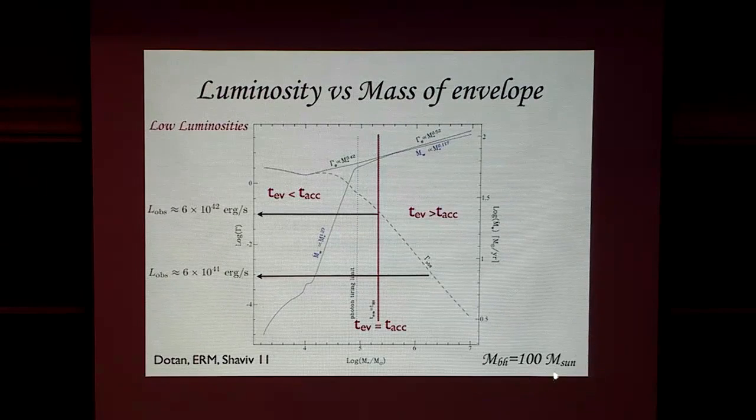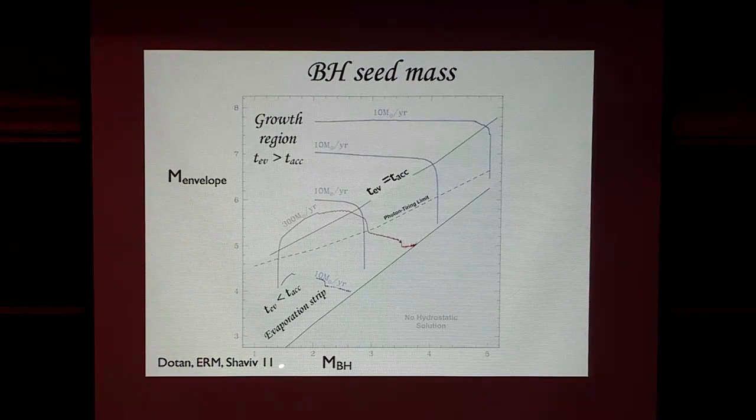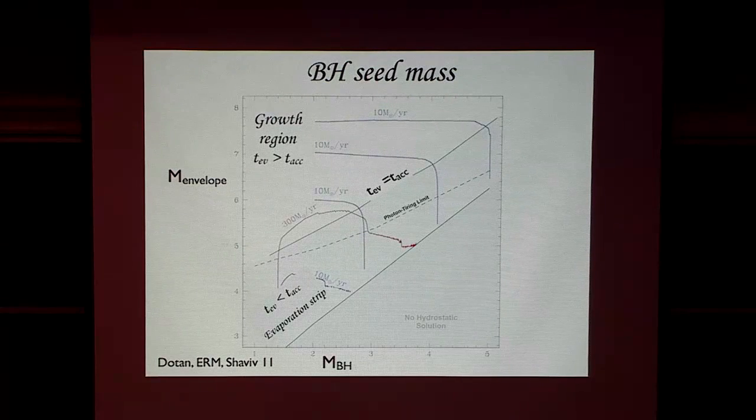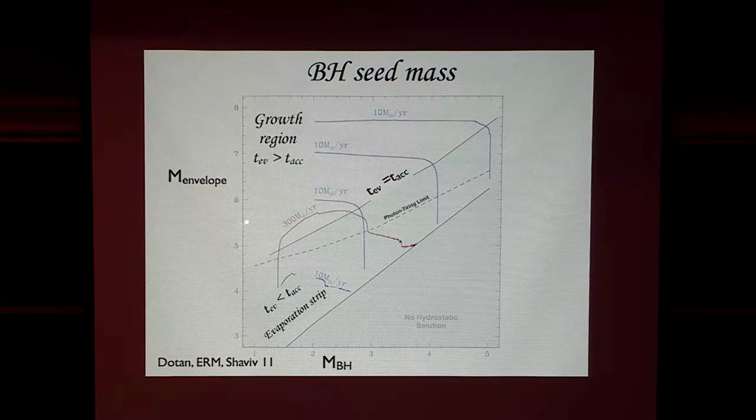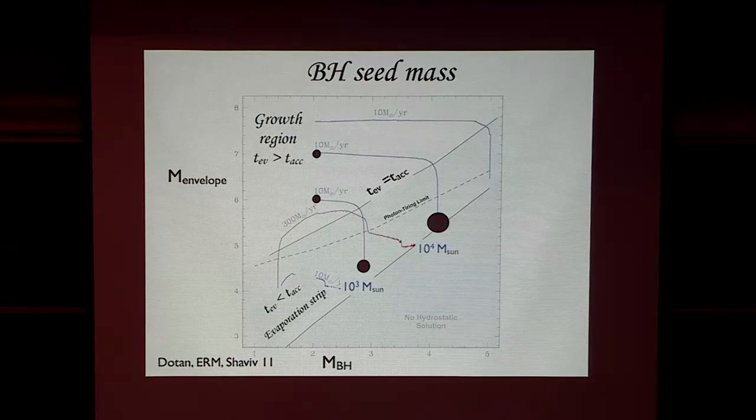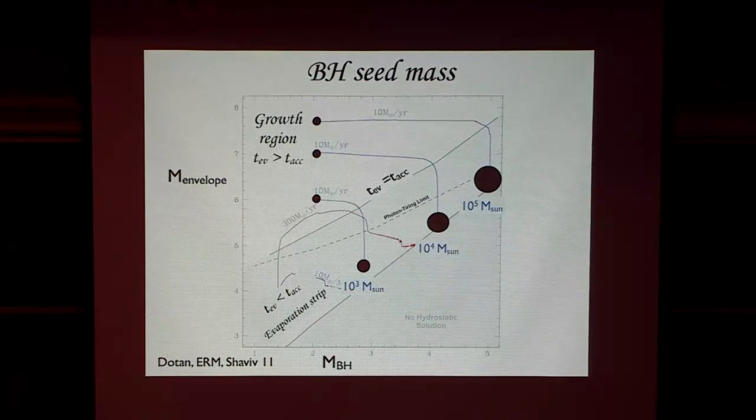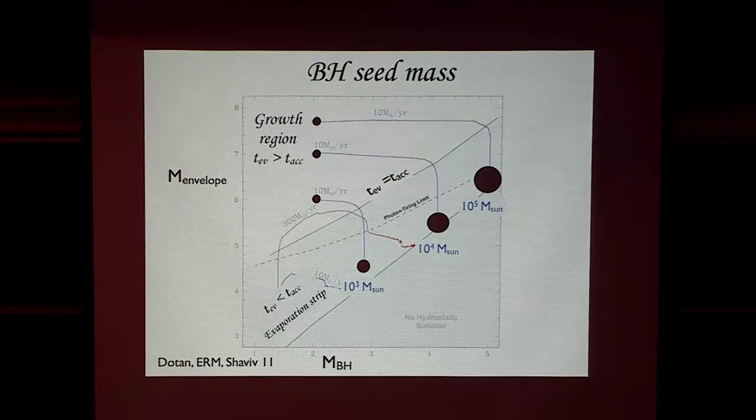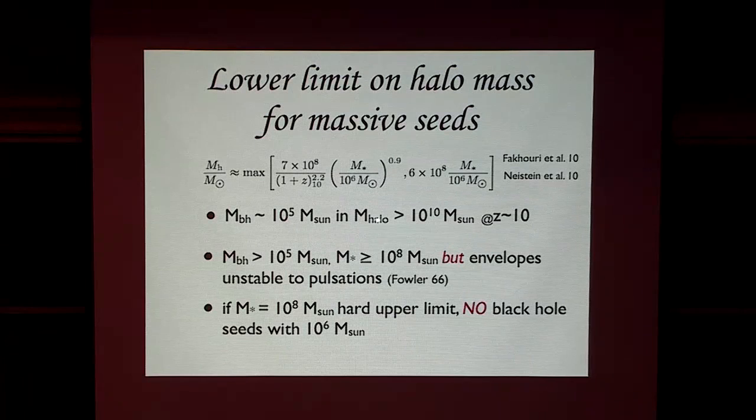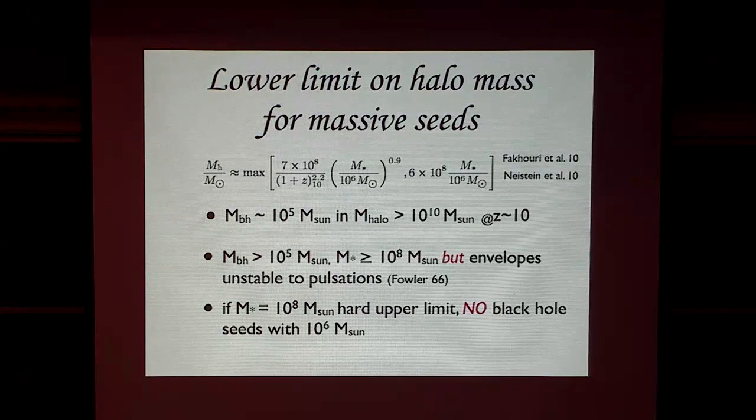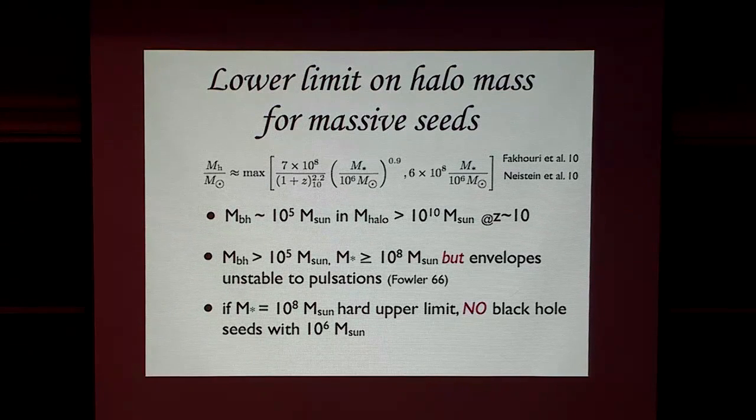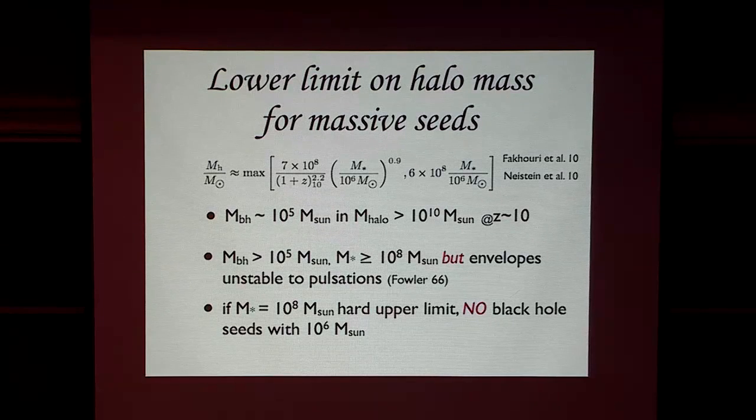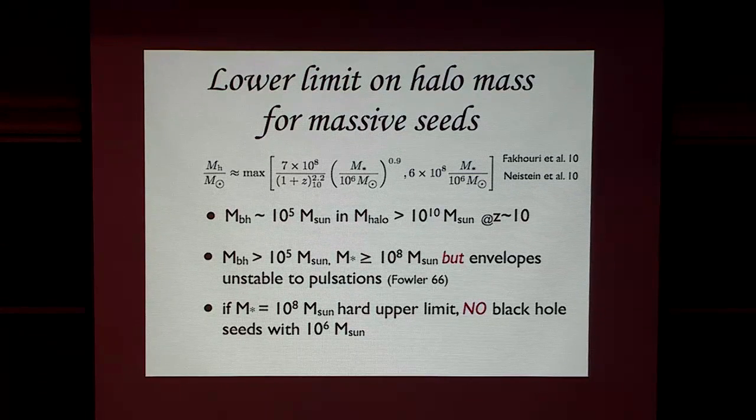I do an array of black holes for each one of the masses. I have a strip, an evaporation strip, and here you cannot grow black holes. You have to go to very high mass of the envelope. The bottom line is that to get 10 to the 5, you need to have an envelope of almost 10 to the 8 solar mass. Otherwise, you cannot do it. These are found only in halos of 10 to the 10 solar mass, redshift 10, or 10 to the 9, redshift 15. If you take only the stars that will generate 10 to the 5 solar mass black hole, the rate will be very low. That's it. Thank you.